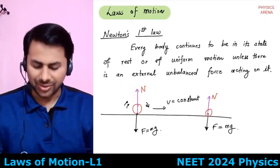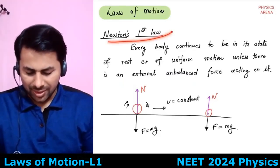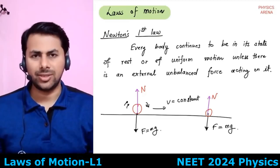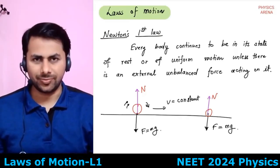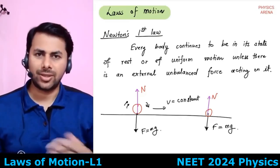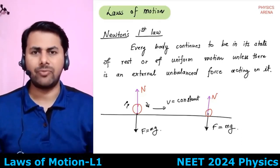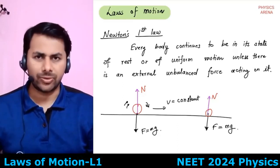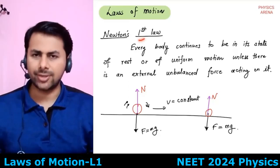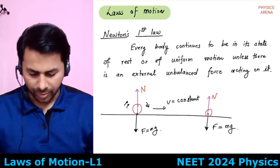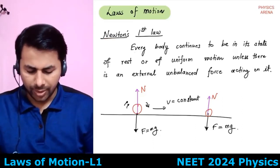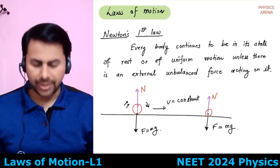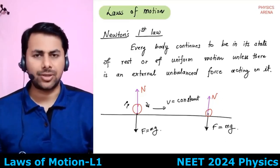Let's begin with the laws of motion. This is Newton's first law, which is the law of inertia. This law was actually given by Galileo, not Newton. But because Newton formulated the framework of mechanics and gave the concept of force — the formula for force — this law is also attributed to Newton. Newton's first law states: everybody continues to be in its state of rest or of uniform motion unless an external unbalanced force acts on that body.